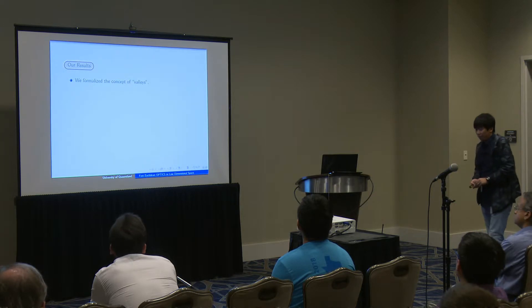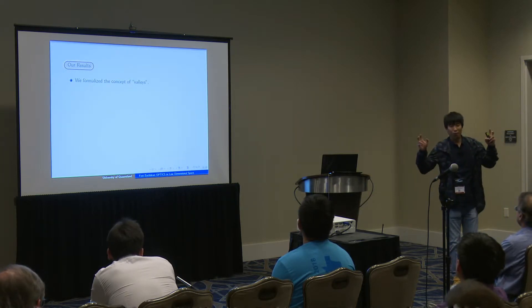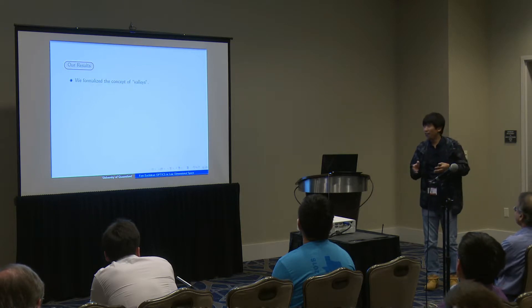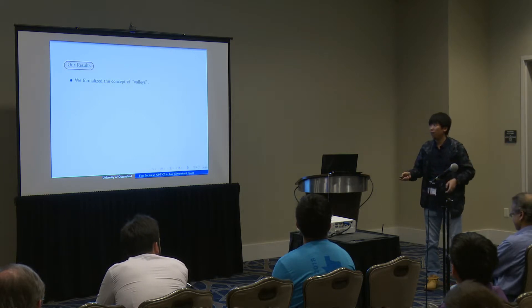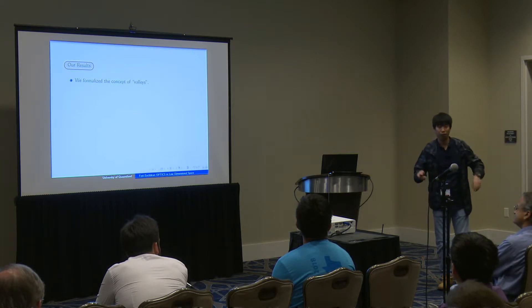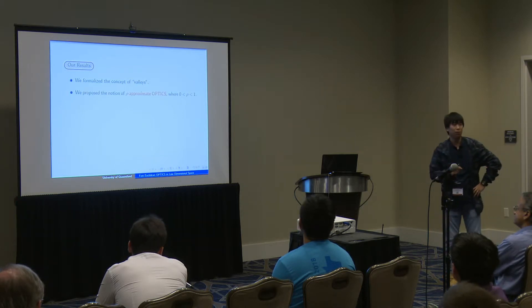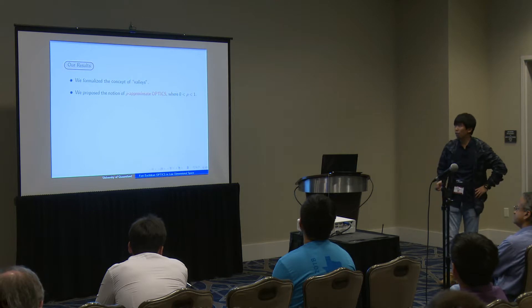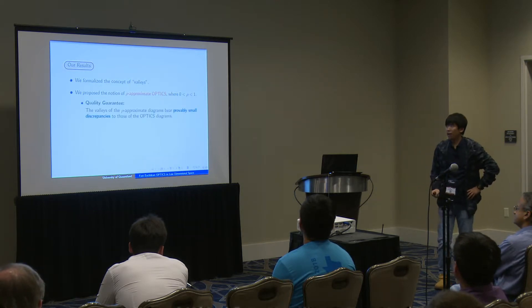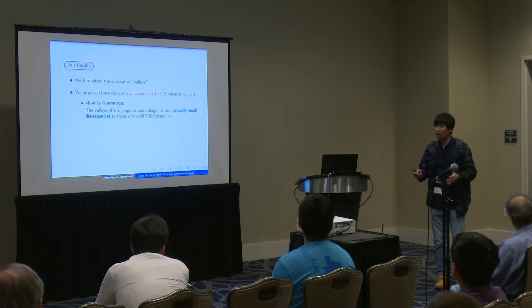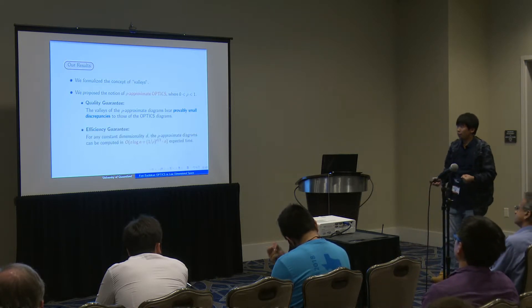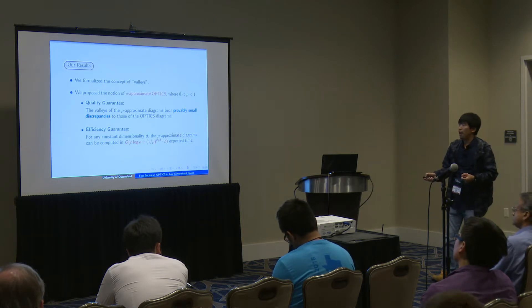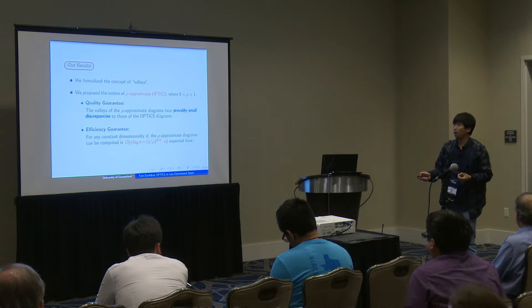Our result is, somewhat surprisingly, the following. We note that the concept of 'valley' is often used informally but has not been formally defined in the literature. Our first contribution is to formalize the concept of valley. We then propose the notion of rho-approximate OPTICS. The key properties are: first, it has a strong quality guarantee — the values of the rho-approximate diagram bear only a provably small discrepancy compared to the exact one; and second, the rho-approximate diagram can be computed in O(n log n) expected time for constant rho and constant dimensionality d.